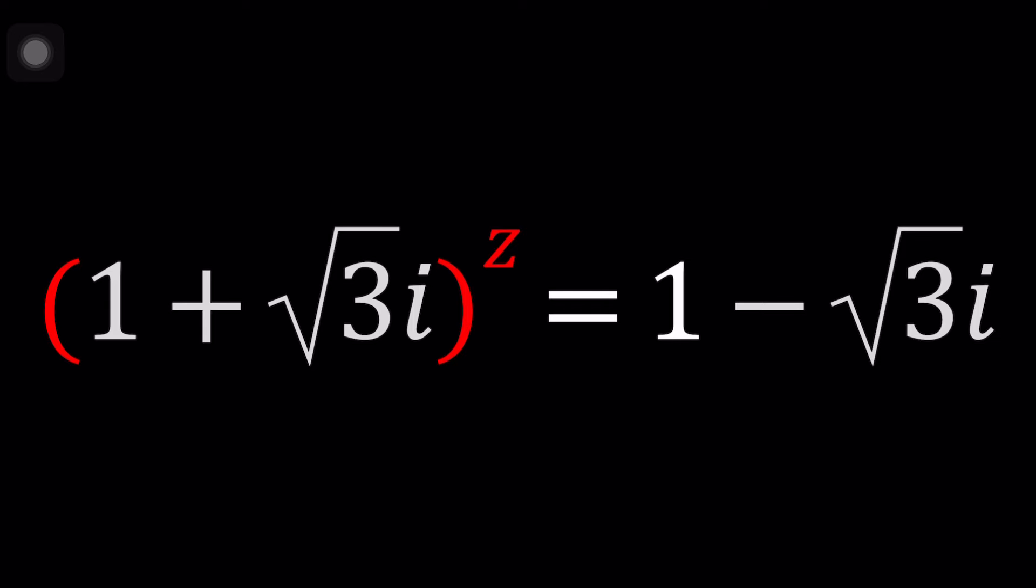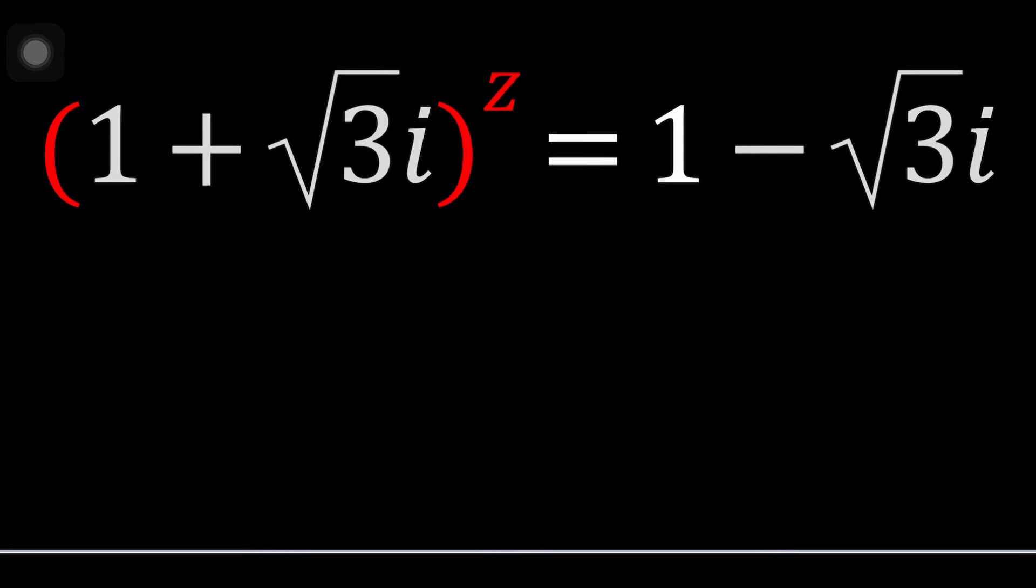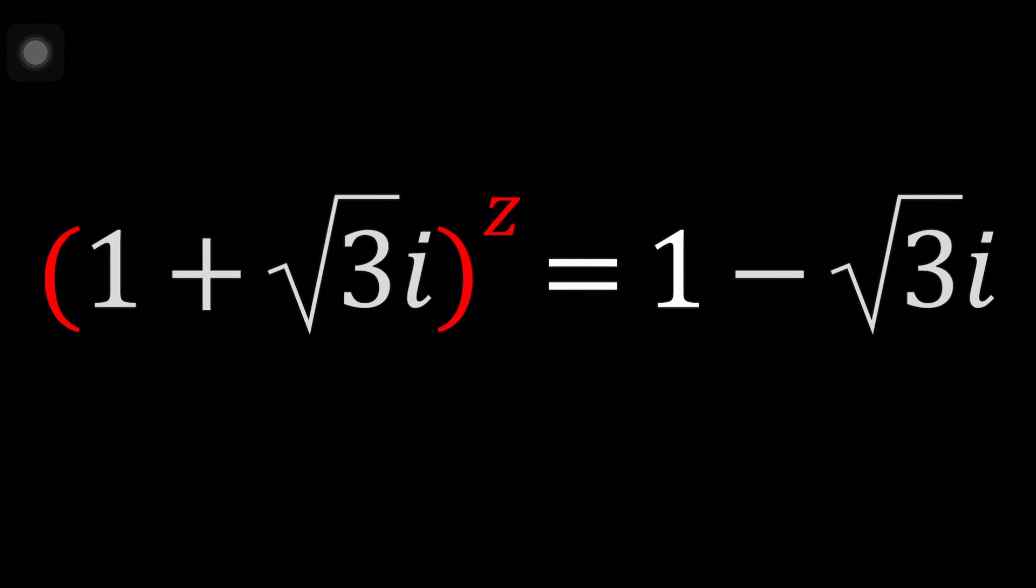So I guess we can call this exponent an exponent that negates? No, an exponent that conjugates. I haven't made this problem because it somewhat looks familiar. Anyways, I hope it's not repeat. So we have this equation and how can we solve for z?